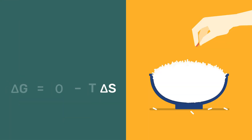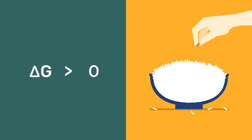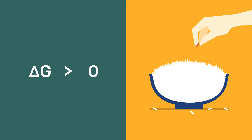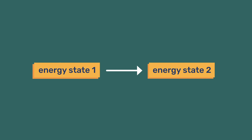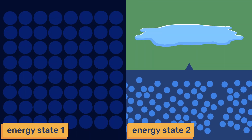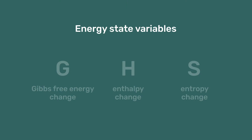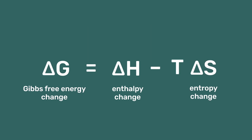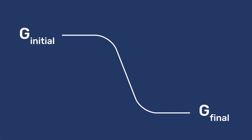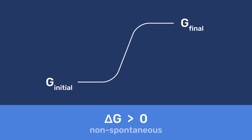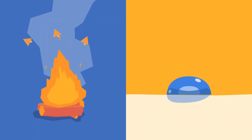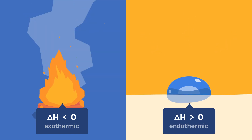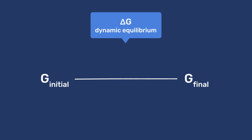On the contrary, removing the grain implies a negative delta S and a positive delta G. The process requires an effort and is non-spontaneous. In summary, we have seen that thermodynamics generally refers to changes in energy states between final and initial states. The energy state variables of free energy, enthalpy, and entropy are useful in defining the nature of these changes. Free energy changes tell us whether a reaction is spontaneous or not, while enthalpy changes tell us whether it releases heat or not. Dynamic equilibrium is reached when the free energy change is zero.